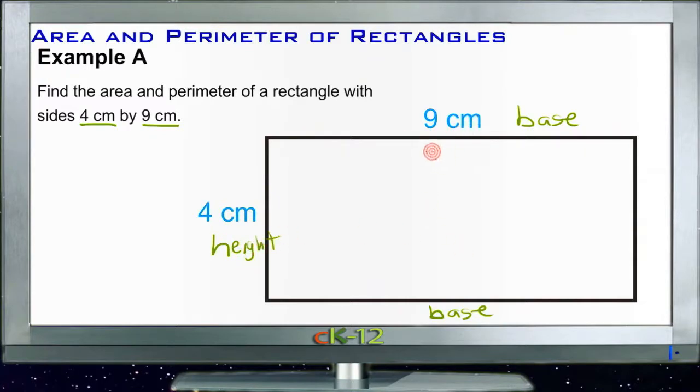So our rectangle here has a B of 9 and an H of 4. And our area formula is just B times H. And our perimeter formula is 2B plus 2H.